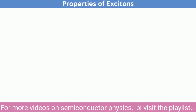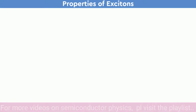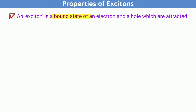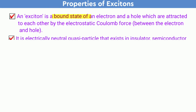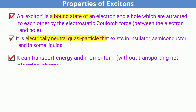Let us talk about some properties of excitons. An exciton is a bound state of an electron and a hole which are attracted to each other by the electrostatic Coulomb force. It is an electrically neutral quasi-particle that exists in insulators, semiconductors, and in some liquids.